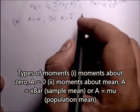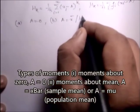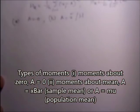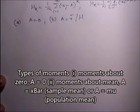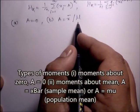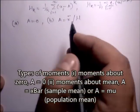Here we will use mu. Mu is the moments about the mean — it is the population mean, while x-bar is the sample mean.